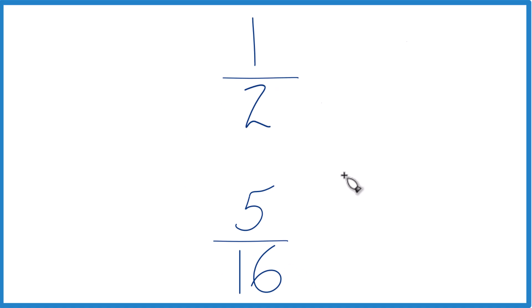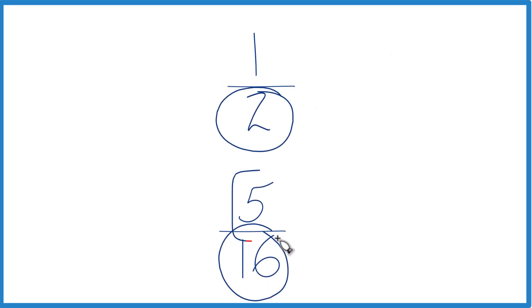The other way to do it is to find a common denominator, something that 2 and 16 go into evenly. Because if we can get the denominators here to be the same, we just compare the numerators to figure out which fraction is larger.